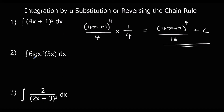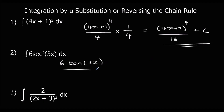Question 2: integrate 6 sec²(3x) with respect to x. We integrate normally — sec squared goes back to tan — so we get 6 tan(3x). Then divide by the bracket differentiated, which is 3. So 6 over 3 is 2, giving us 2 tan(3x) plus c.